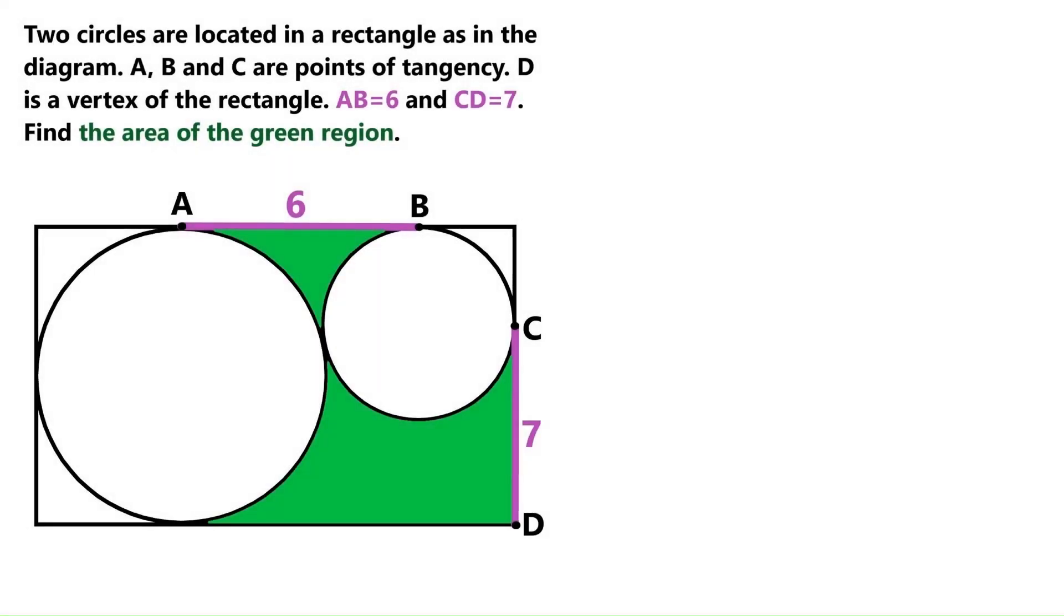In this super cool geometry problem, we've got this big rectangle, and it's got these two circles tightly packed inside it. And we don't know the circle's radii, but we know that this segment over here is 6, and that this segment down here is 7, and we need to find the area of the green region, which includes this larger region down here and the smaller region up here.